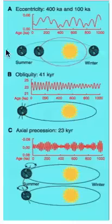The first orbital parameter is known as eccentricity. This has a cycle of 400,000 years and 100,000 years and describes the shape of the Earth's orbit around the Sun, which varies from a shape that's more elliptical to less elliptical.